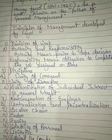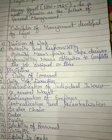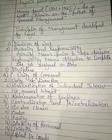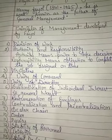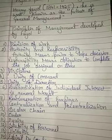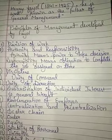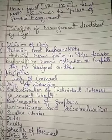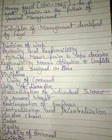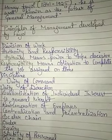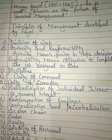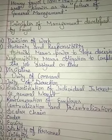The eighth principle is Centralization and Decentralization. Centralization means concentrating power in one hand — only top-level managers take decisions. Decentralization means that bottom level and middle level managers also have the power to take decisions. According to Fayol, both centralization and decentralization should exist together. Without balance, either everything is decided arbitrarily at lower levels, or only the top level can decide everything.